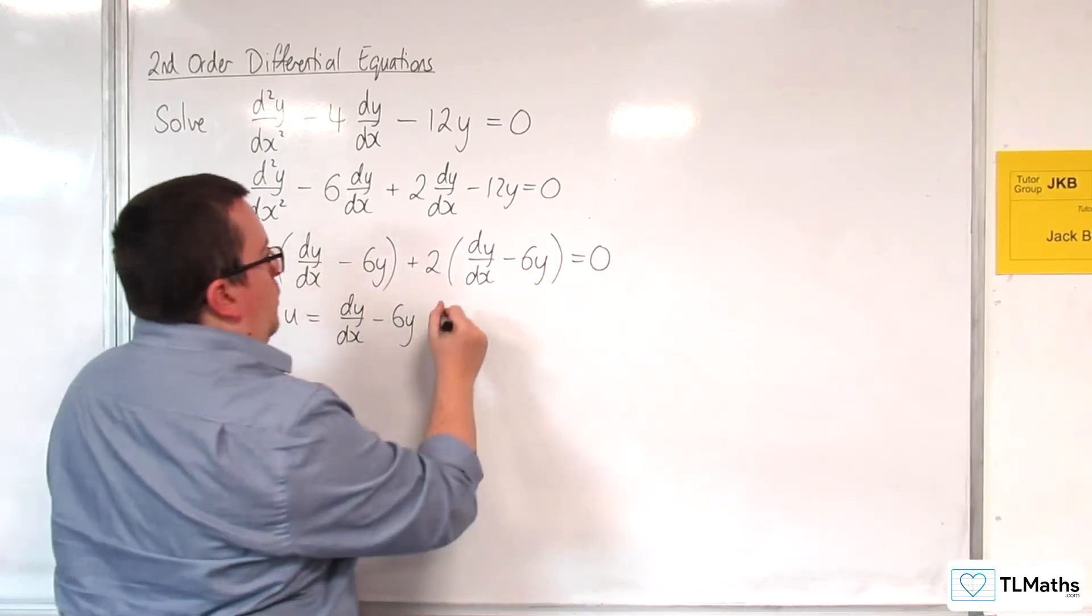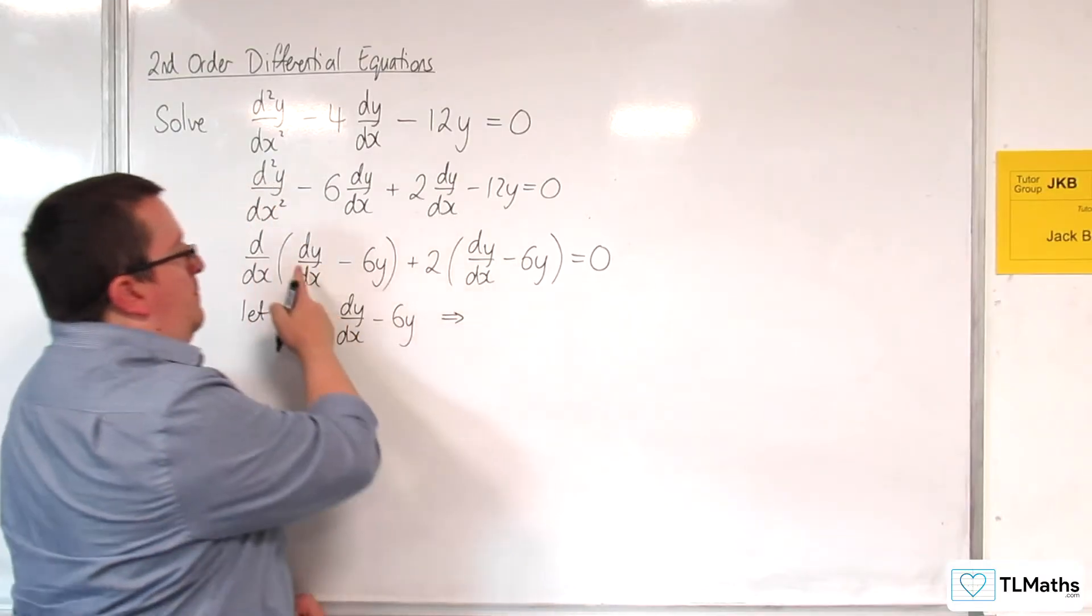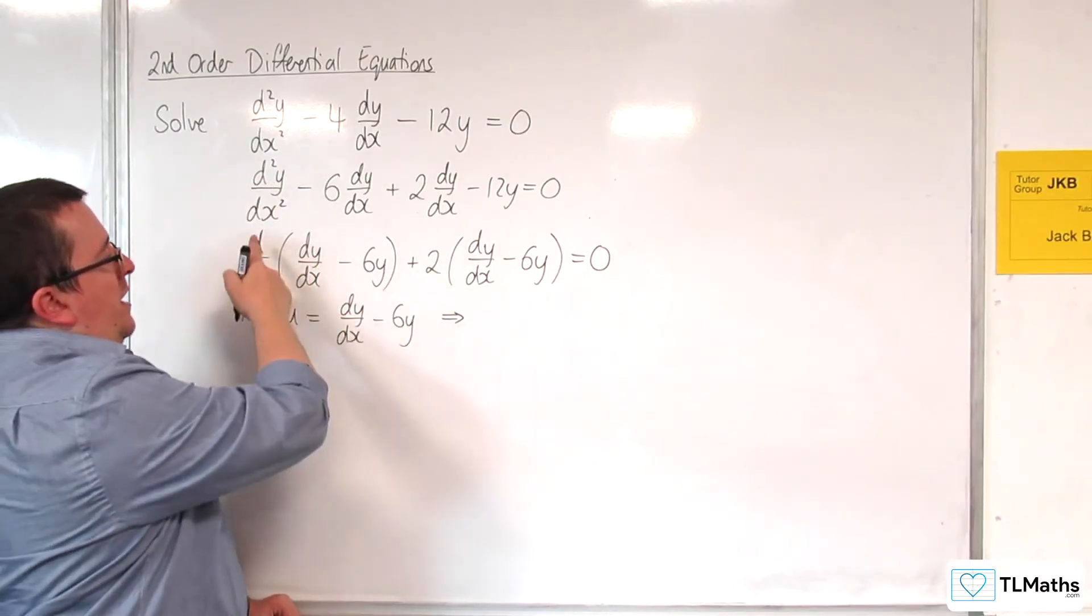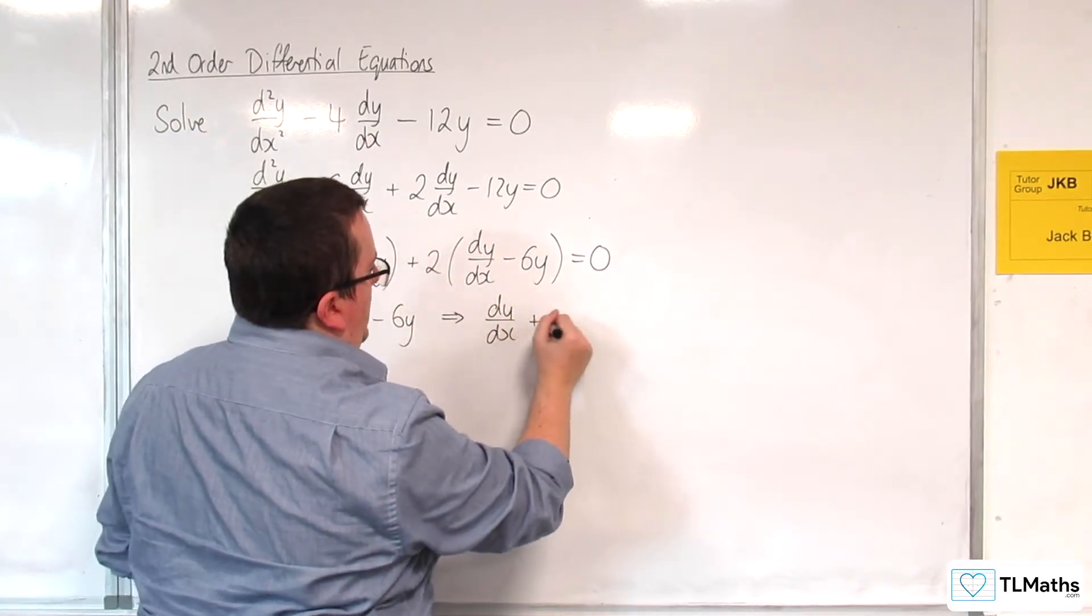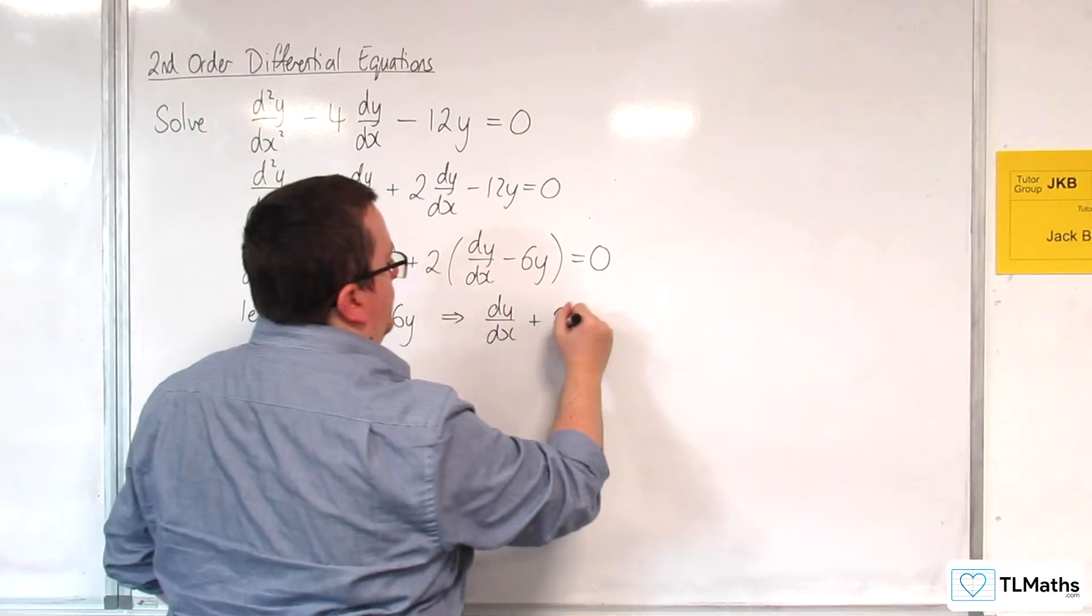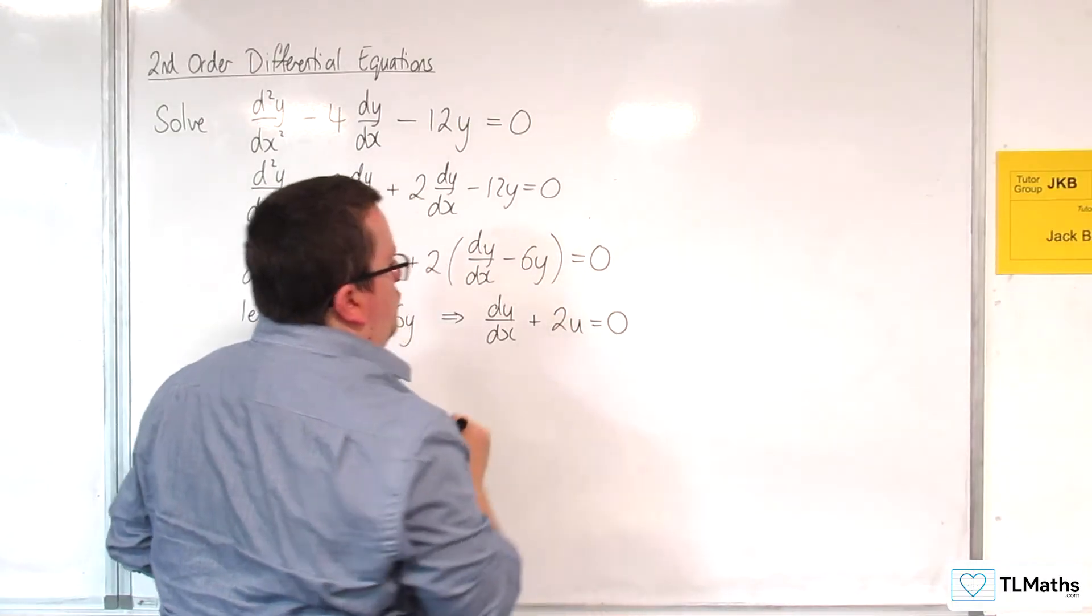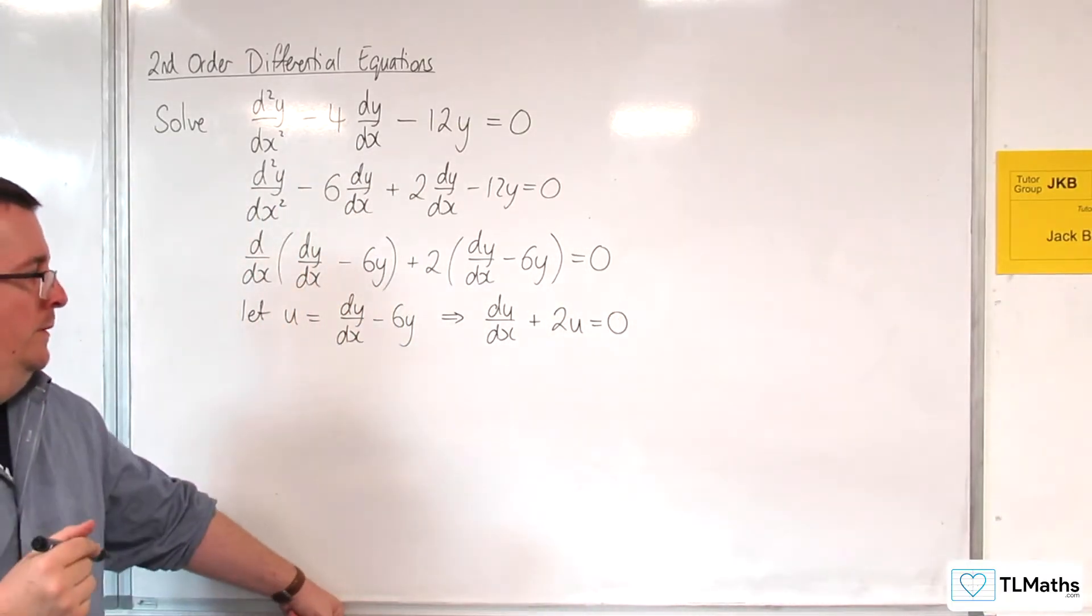So what that means is that my derivative here becomes d/dx of u, so du/dx, plus 2u, is equal to 0.